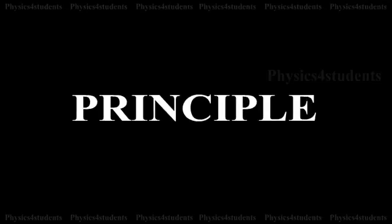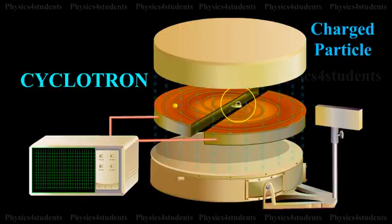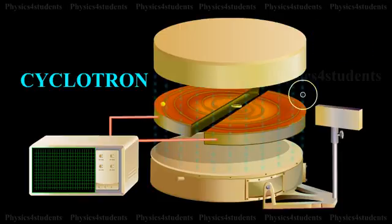Principle: Cyclotron works on the principle that a charged particle moving normal to a magnetic field experiences magnetic Lorentz force due to which the particle moves in a circular path.